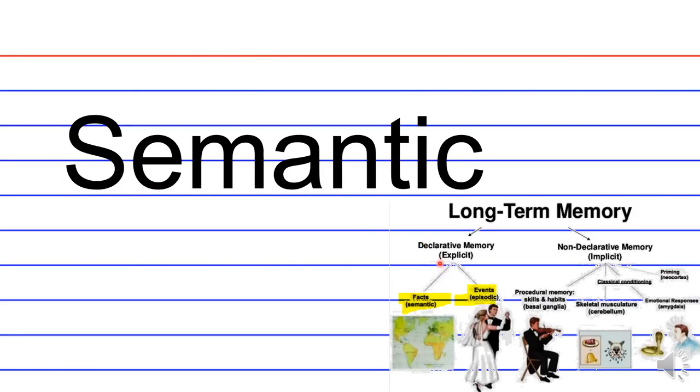So the broad categorization is declarative or explicit memory. But semantic memory is the memory of facts like the name of countries and their location as well as episodic memory.